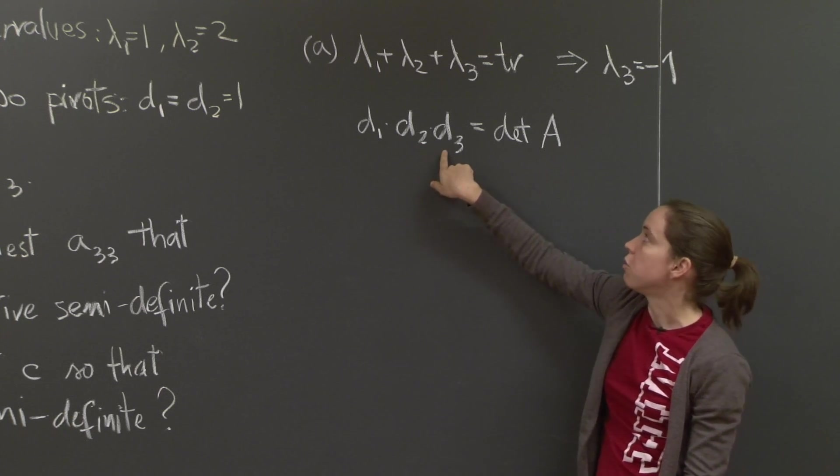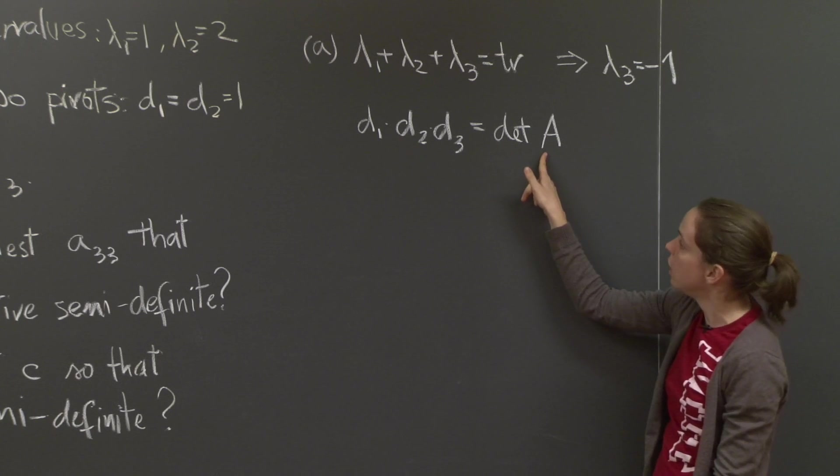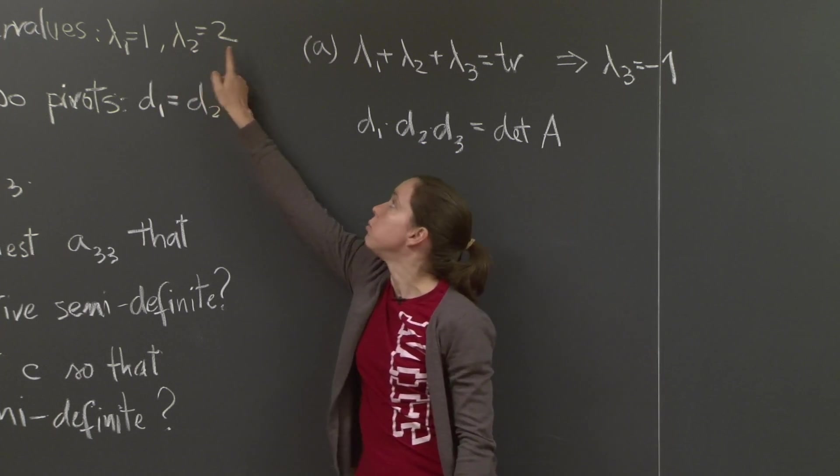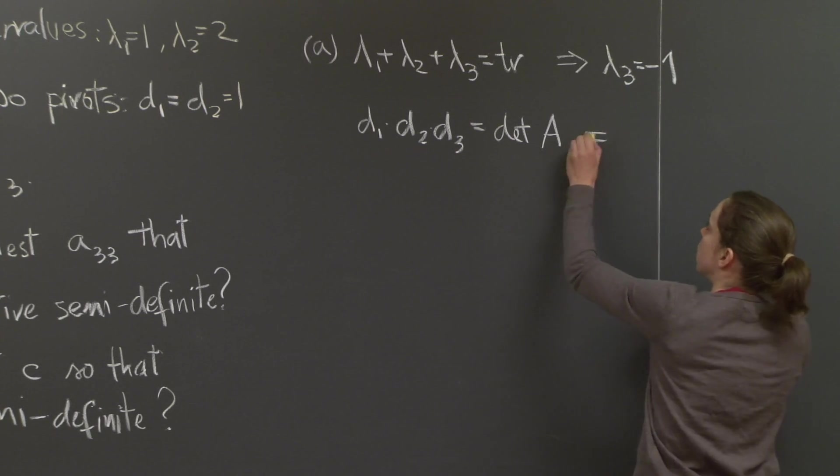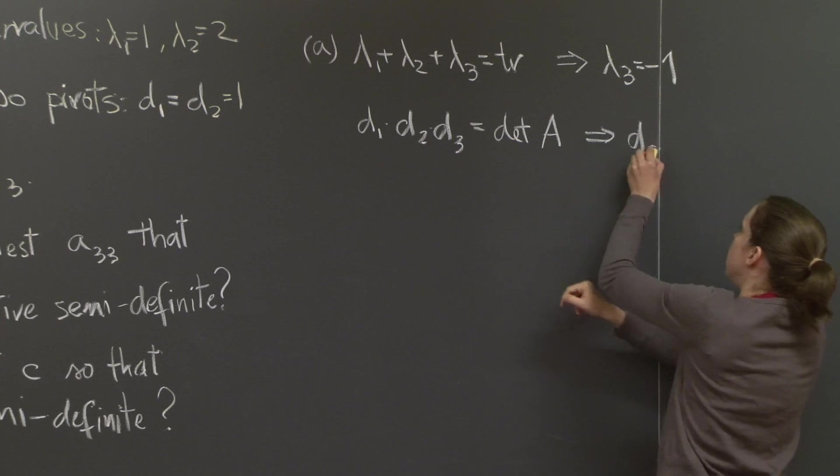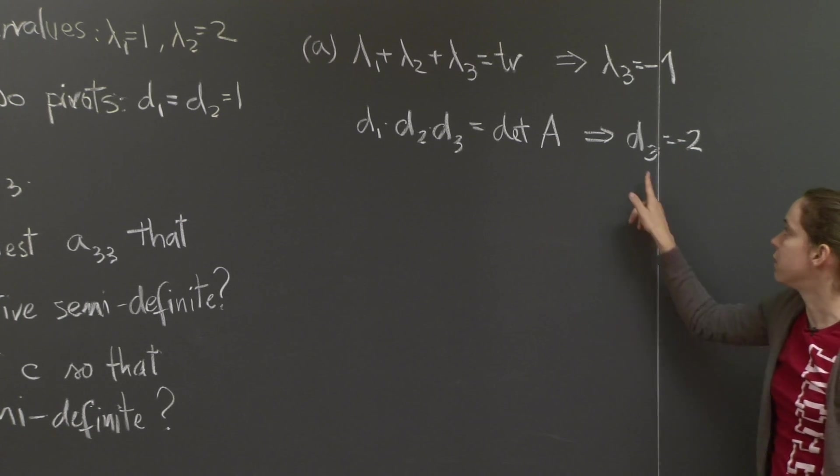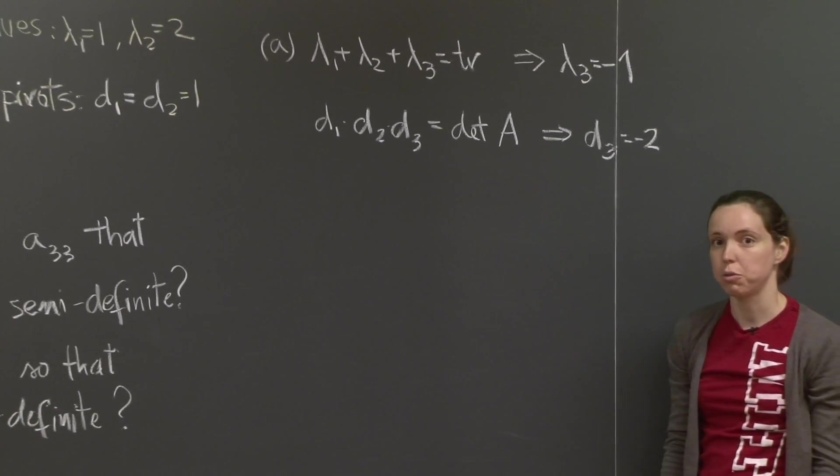The product of the three pivots will be equal to the determinant of A. And the determinant of A is the product of the eigenvalues. 1 times 2 times minus 1. So it's equal to minus 2. 1 times 1 times d3 is equal to minus 2. Here's your third pivot, d3. That finishes part A. Is that the result that you got?